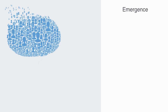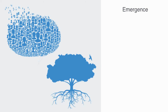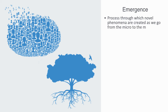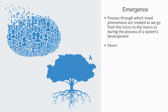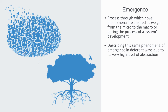All of what we've been discussing in this video is really part of the very big idea of emergence — the process through which novel phenomena are created as we go from the micro to the macro, or during the process of the system's development. Emergence is a very abstract and pervasive phenomenon, but all of these models — from self-organization, to symmetry breaking, to phase transitions, and punctuated equilibrium — are all really describing this same phenomenon of emergence in different ways, due to its very high level of abstraction and ubiquity.